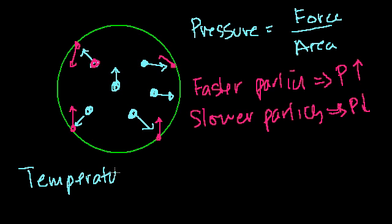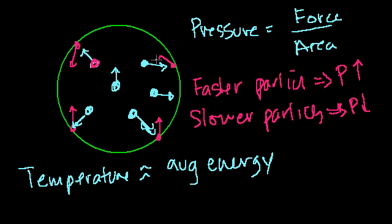Temperature can and should be viewed as the average energy of the particles in the system. So I'll put a little squiggly line because there's a lot of ways to think about it. Average energy, and mostly kinetic energy, right? Because these particles are moving and bouncing. The higher the temperature, the faster that these particles move, and the more that they're going to bounce into the side of the container.